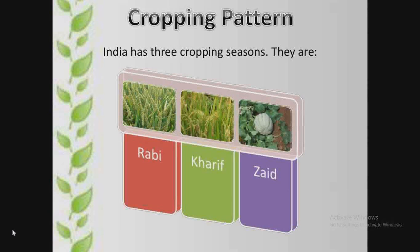Rabi, Kharif and Zaid — all these words are derived from the Arabic language. Now we can study in detail about these three cropping seasons.